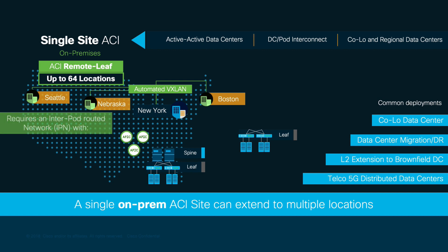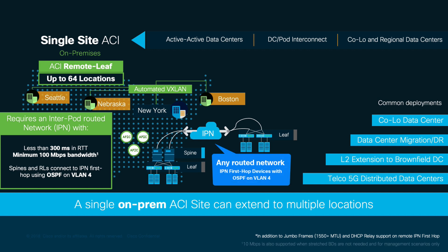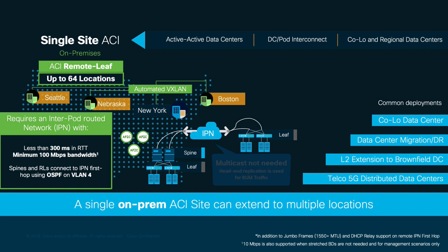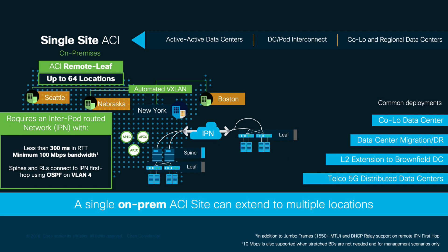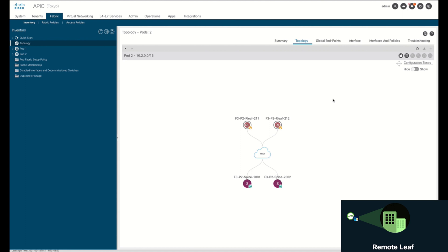Just with Remote Leaf, you need an IPN with a few requisites. First, we need a maximum of 300 milliseconds in round-trip time and a minimum of 100 megabits in bandwidth. Just like Multipod, we will connect our Remote Leaf nodes on the far end to the local router or first-hop IPN device, which should support OSPF and DHCP relay as well. In this case, multicast is not needed for BUM traffic, since head-end replication is used instead. As a result, we get a single APIC cluster managing multiple remote sites or branch offices centrally with automated discovery and network extension.